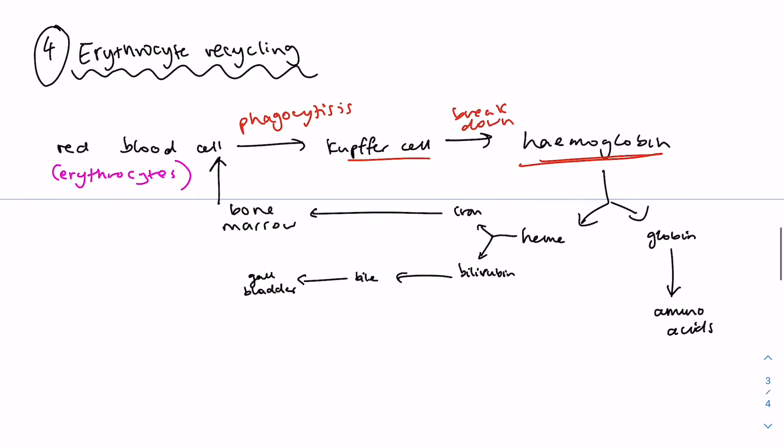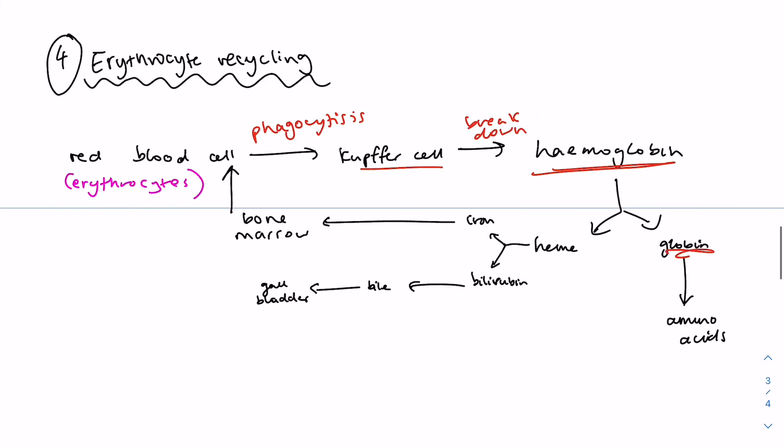And this is further broken down into globin and heme. So globin is digested by peptidases to produce amino acids which are again either recycled or metabolized by the liver.